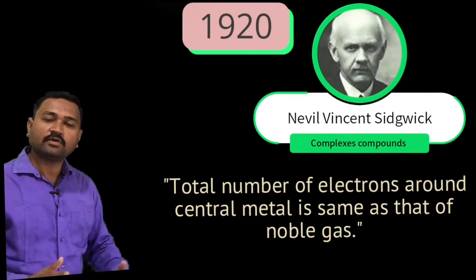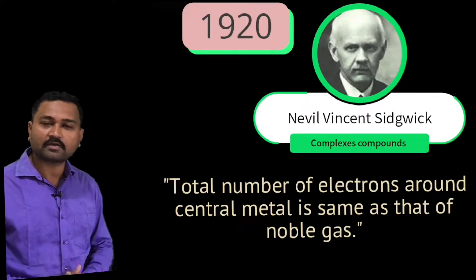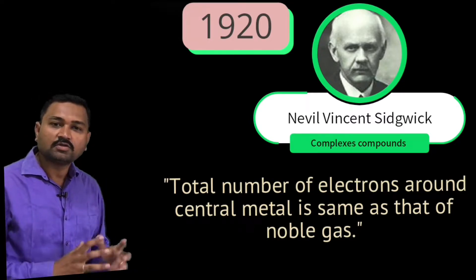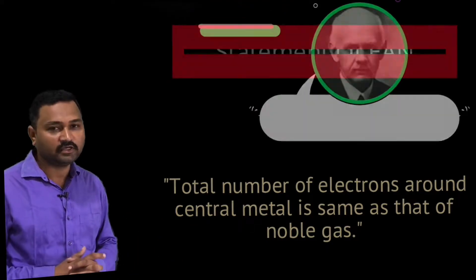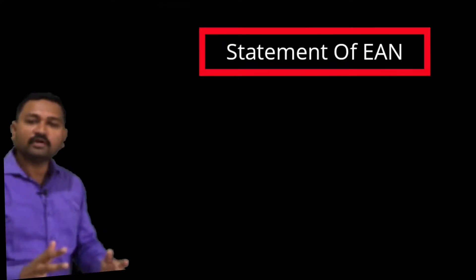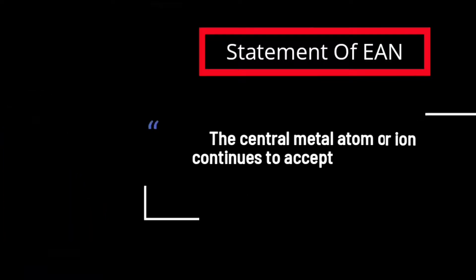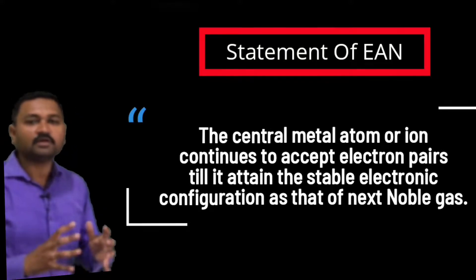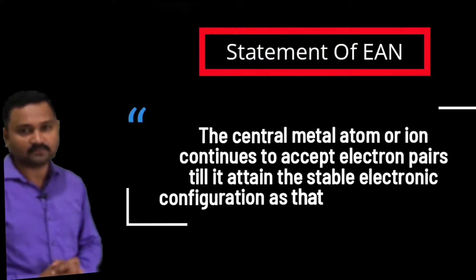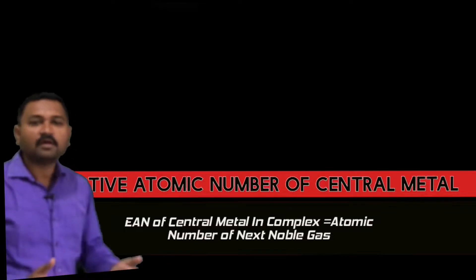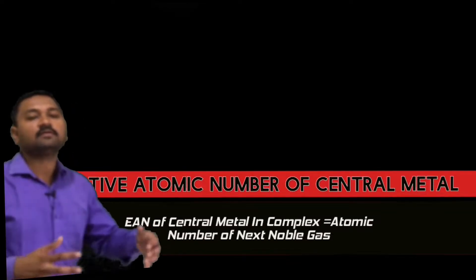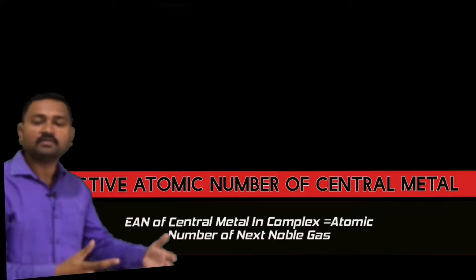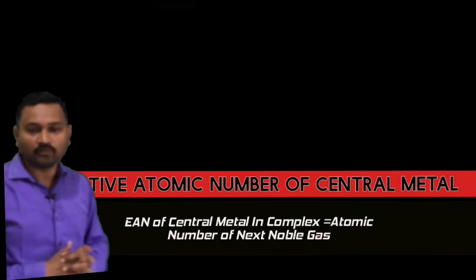In 1920, Sidgwick studied several complex compounds and observed that the total number of electrons present in a coordination compound around the central metal atom equals the total number of electrons present in the noble gases. Based on this, Sidgwick stated that the central metal atom or ion continues to accept electron pairs until it attains the electronic configuration of a noble gas. This means the total number of electrons in the complex equals the atomic number of that noble gas.